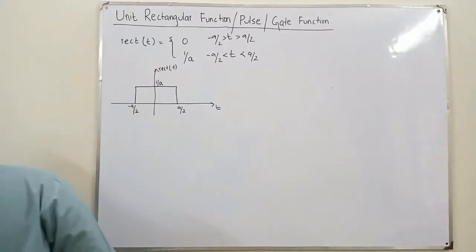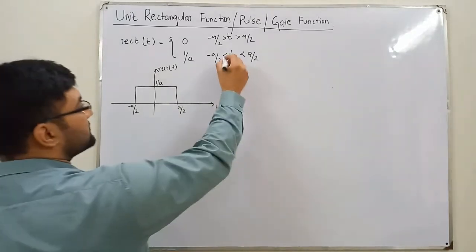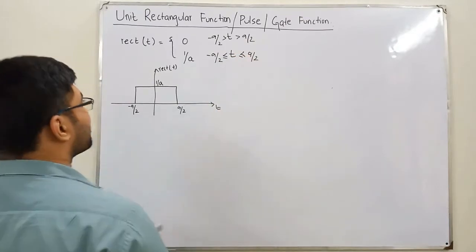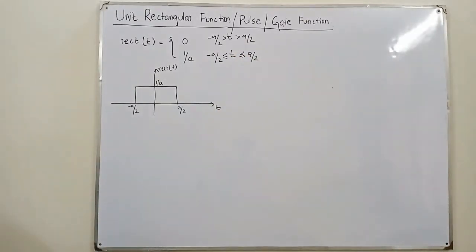So I believe I have written it right, and it should be right, and it is right. You should have an equal sign over there also. Negative a by 2. Fine. So this is the unit rectangular function.